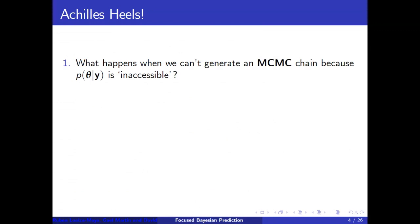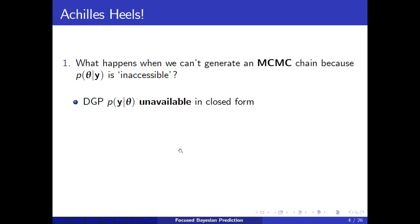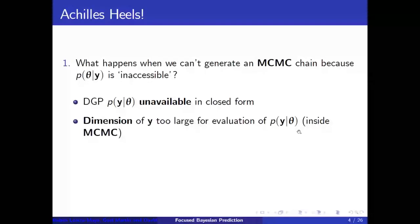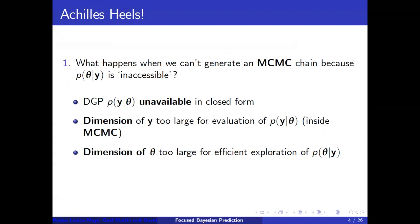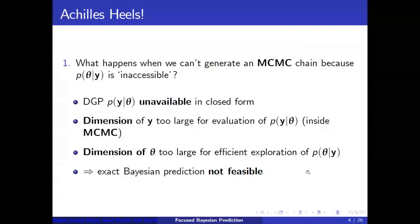But there are a couple of Achilles heels. Firstly, what happens when we can't generate an MCMC chain because we can't access the exact posterior — either because the likelihood function is unavailable in closed form, or because the number of observations is so large that pointwise evaluation of the likelihood inside an MCMC chain is computationally infeasible, or because the dimension of the unknowns is just too large to enable efficient exploration of the parameter space? In any one of these cases, we're stuck. Exact Bayesian prediction is just not feasible.